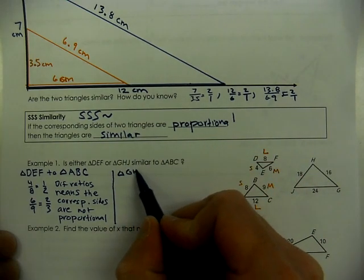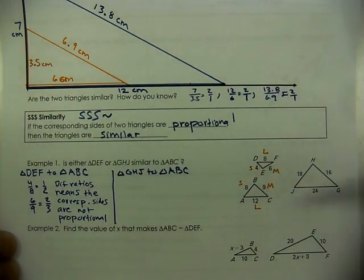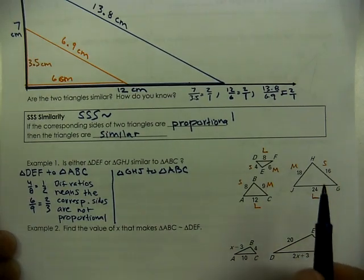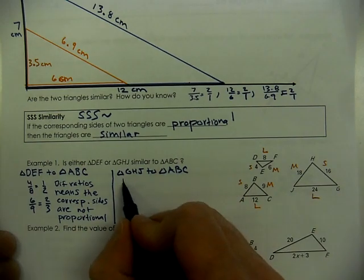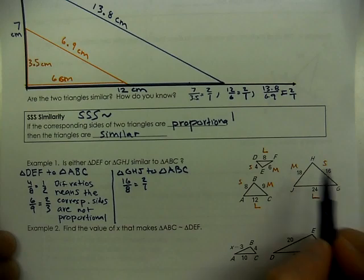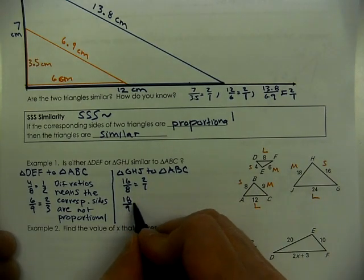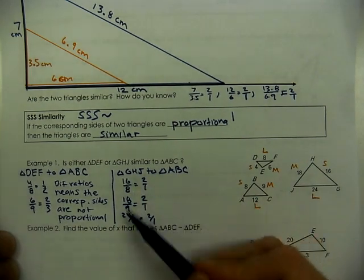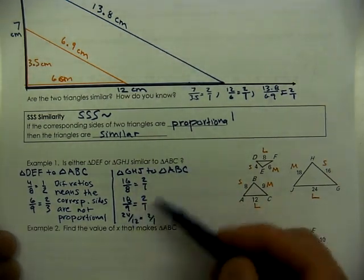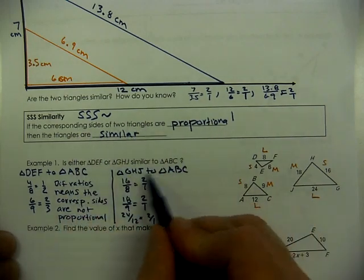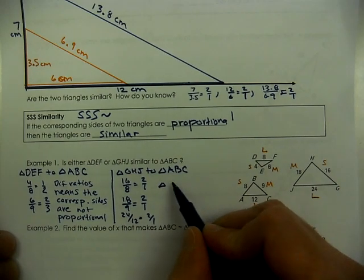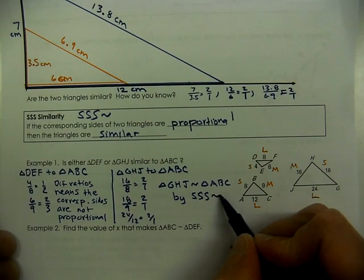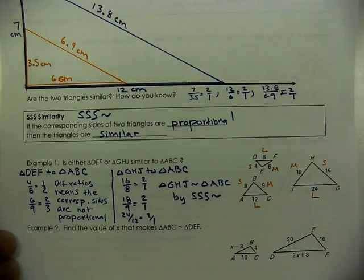Now let's compare triangle GHJ to ABC. GHJ has side lengths of 16, 18, and 24 — small, medium, and large. Small to small: 16 to 8 is 2 to 1. Medium to medium: 18 over 9 is also 2 to 1. Large to large: 24 to 12 is also 2 to 1. There's our common ratio and scale factor, meaning corresponding sides are proportional. So triangle GHJ is similar to triangle ABC by side-side-side similarity.